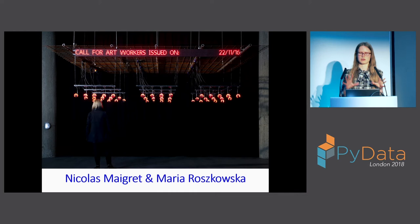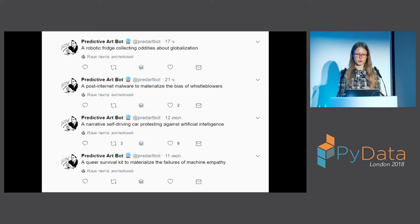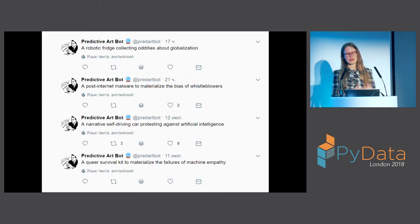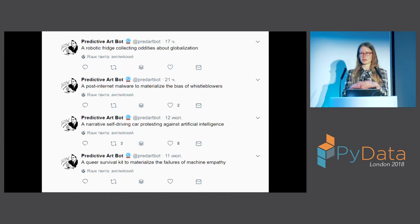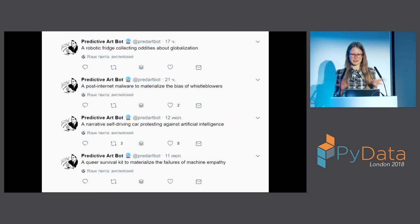Nicolas Maigret and Maria Roskowska have an art project called Predictive Art Bot — a Twitter bot that generates concepts for artworks such as 'A feminist land art piece divulging classified information about online dating' or 'A post-internet malware to materialize the bias of whistleblowers.' If you're from the art world, you realize these can become real works of art. The artists wanted the machine to generate the concept and then artists would realize it, though the resulting videos were somewhat less interesting.